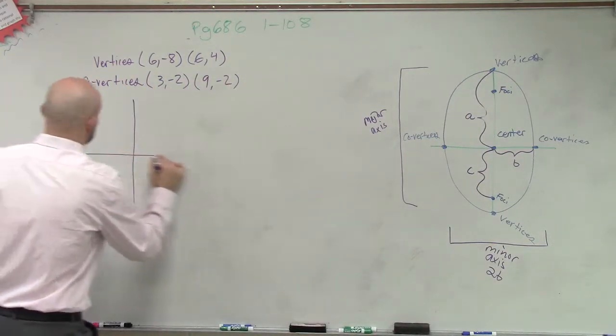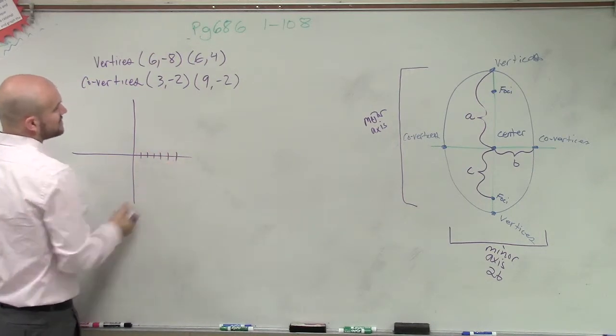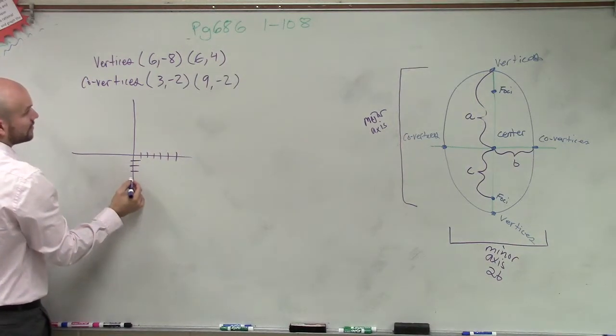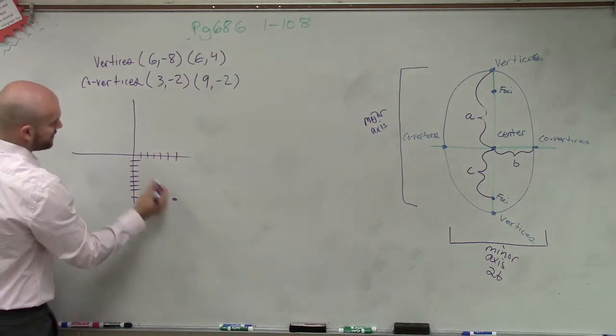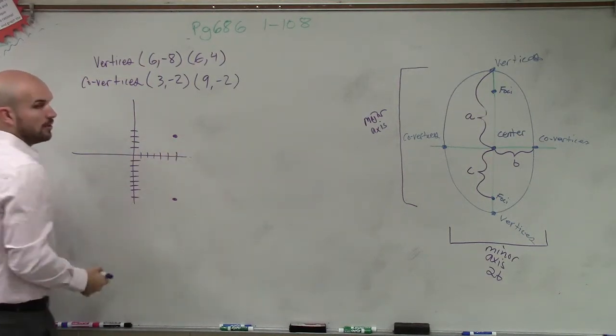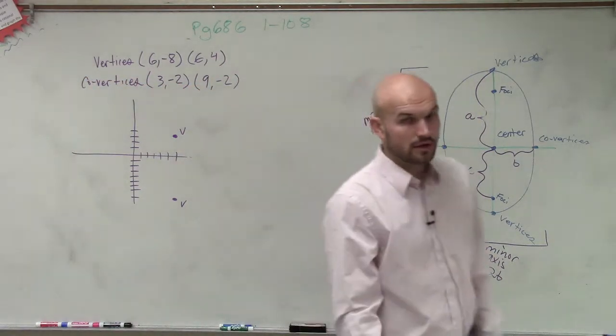So I'll take an x, y graph. And it says (6, -8). So I go 1, 2, 3, 4, 5, 6. And I'm going to go negative 8 and up 4. 1, 2, 3, 4, 5, 6, 7, 8. And then up 4. 1, 2, 3, 4. So those are my two vertices, right?